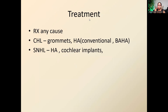For hearing loss management, identify the cause and treat accordingly. In children with conductive hearing loss you can use grommets. Hearing aids are used for sensorineural hearing loss, though you cannot do much beyond amplification. Babies with congenital hearing impairment may warrant cochlear implants.